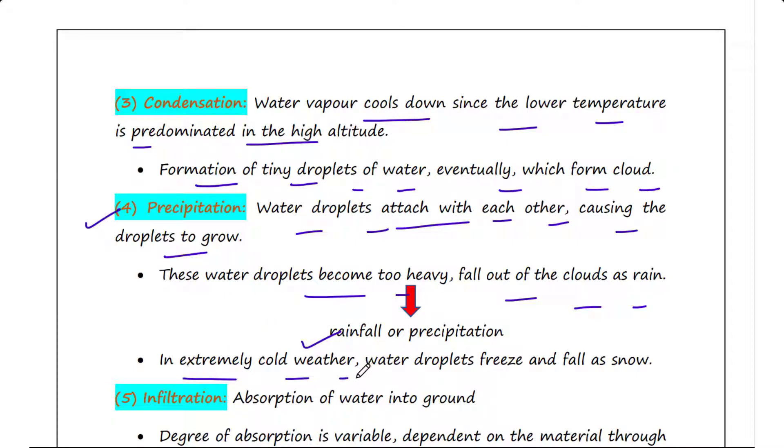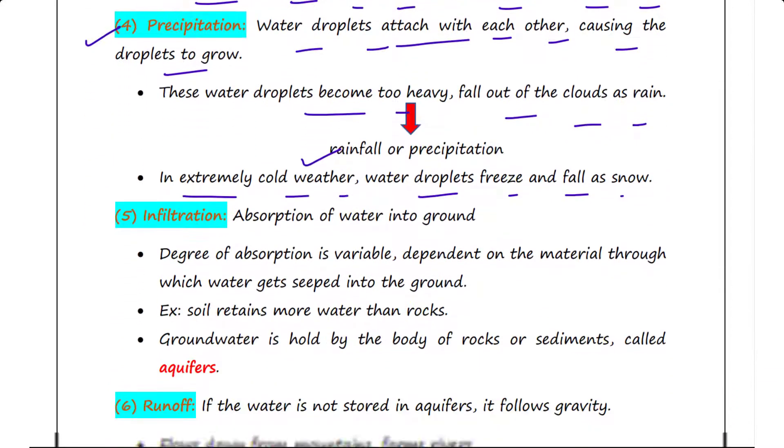In extremely cold weather, water droplets freeze and fall as snow. Next process is infiltration. Infiltration is the process which describes the absorption of water into ground. The degree of absorption is variable and dependent on the material through which water gets seeped into the ground.